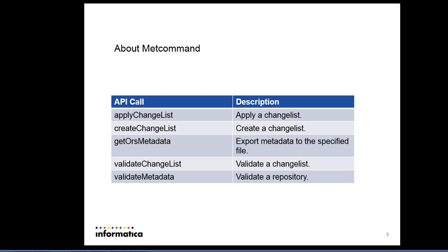The first thing is the mate command. The mate command is nothing but a wrapper which we use to call APIs. The mate command APIs currently available are: apply change list, create change list, get ORS metadata, validate change list, and validate metadata.